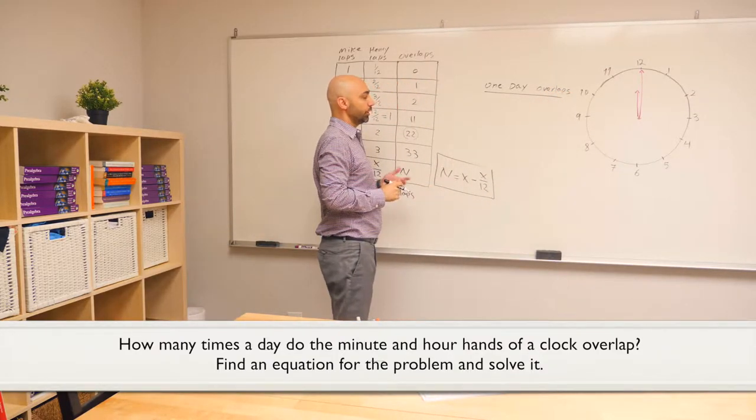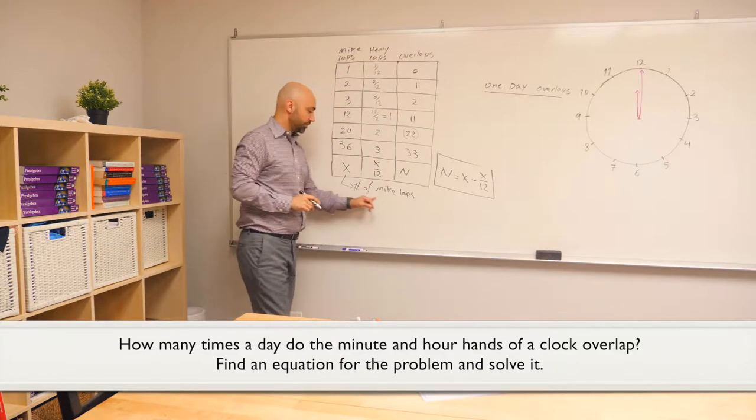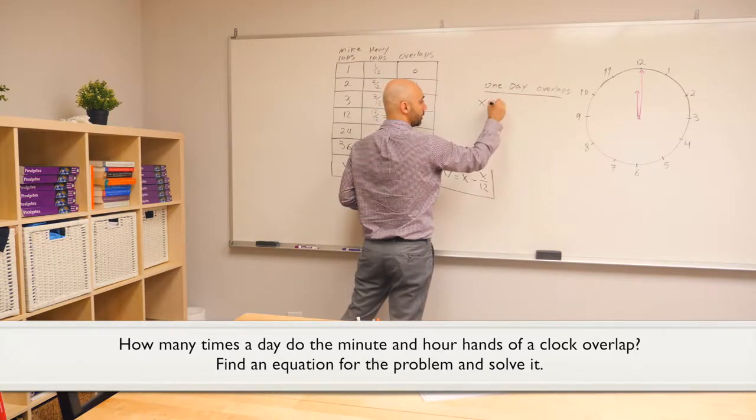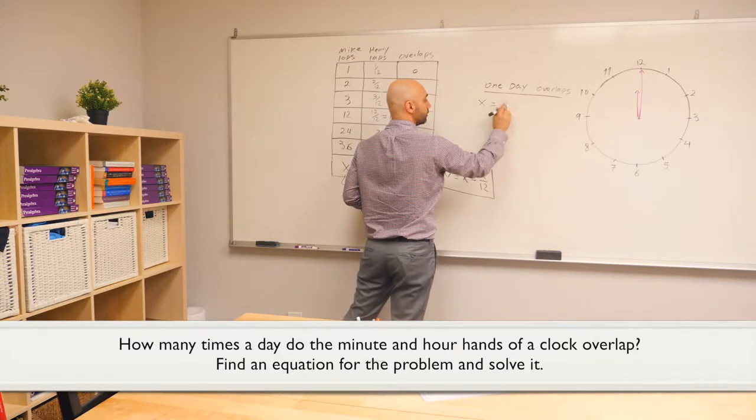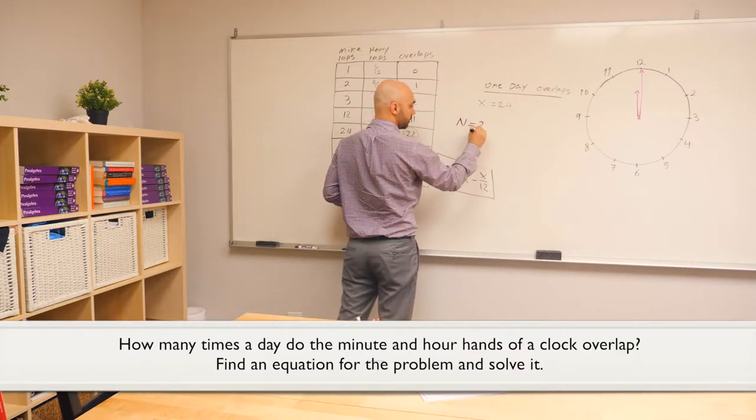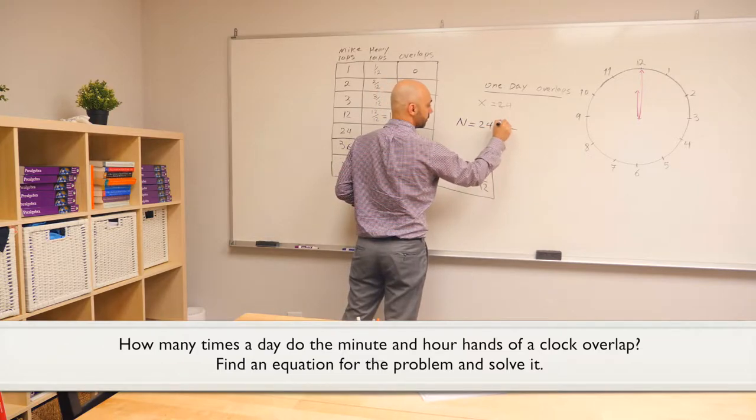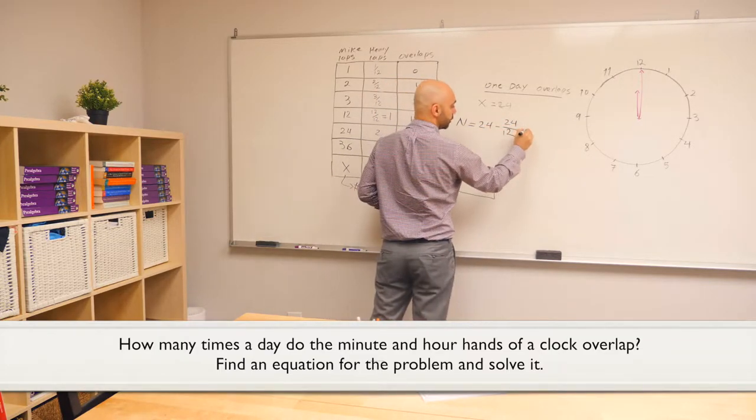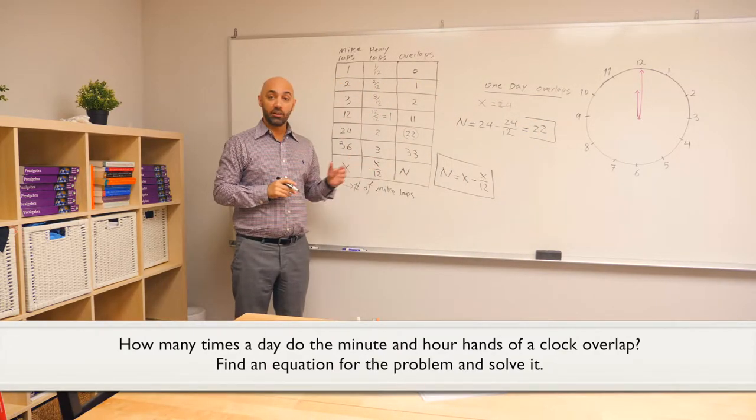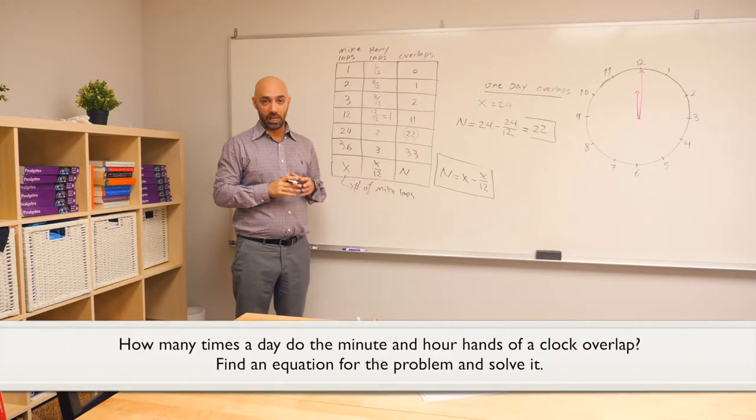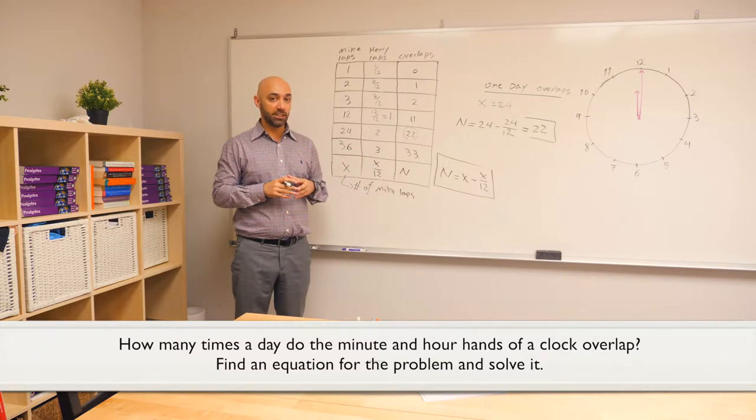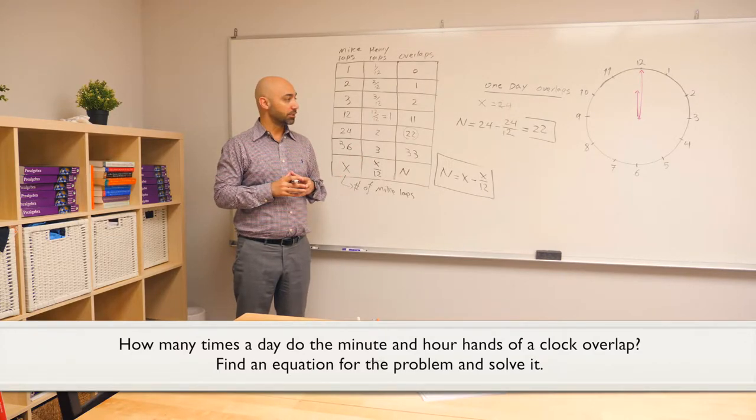Now, one day consists of 24 hours. And remember, x representing the number of Mike laps is also the number of hours. So, x for this problem would be 24, plugging the number into our equation. We're going to get 22 as the answer. Using our equation, we see that there is going to be 22 overlaps within one full day between Mike and Henry, which are representing the minute and the hour hands of the clock. So, 22 is our answer.